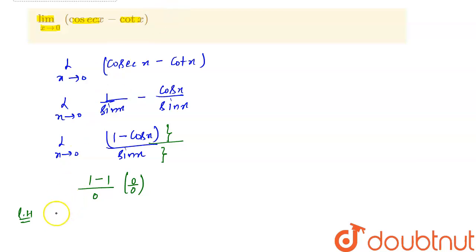So limit x tends to 0, differentiation of numerator is 0 minus, differentiation of cos x is equal to minus sin x, so here minus minus will become plus, so it will be sin x upon, differentiation of sin x is equal to cos x.